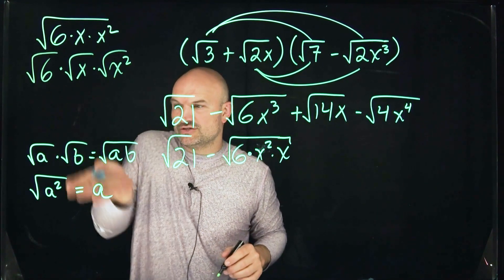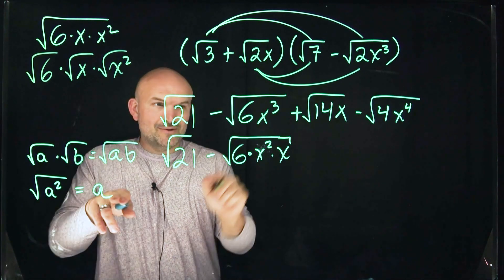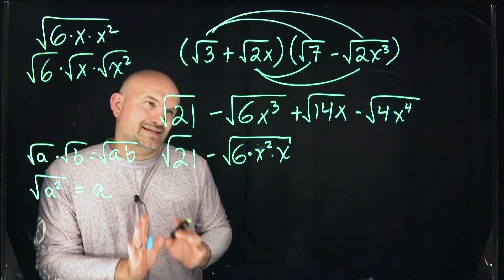Now, again, remember, what do we know about the square root of x squared, right? a squared, that's going to be an a. So there we go. We can now simplify that to x, but we'll get to that in the next step.